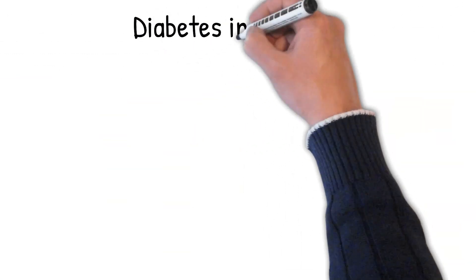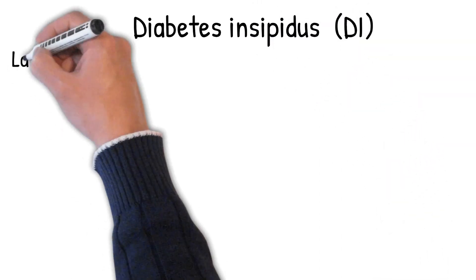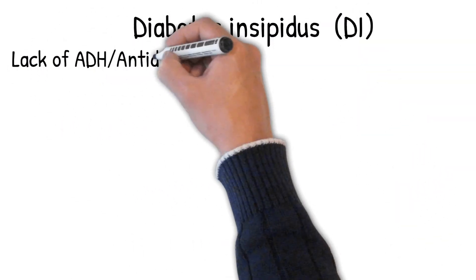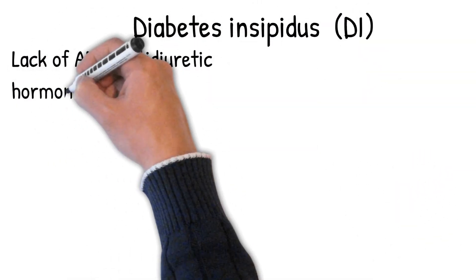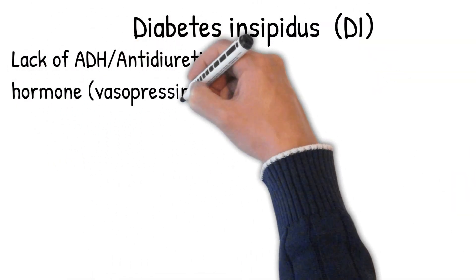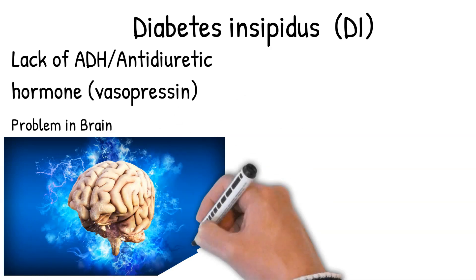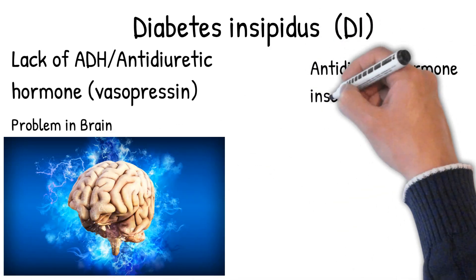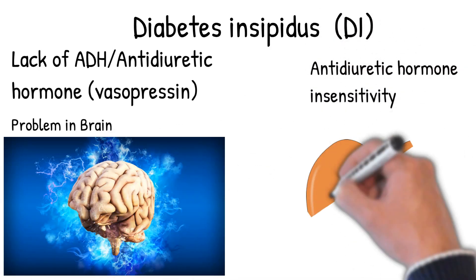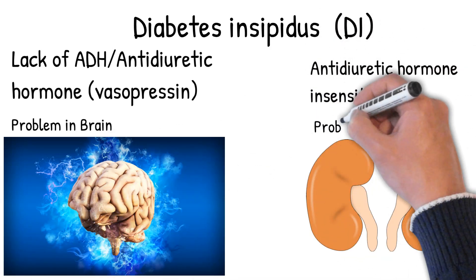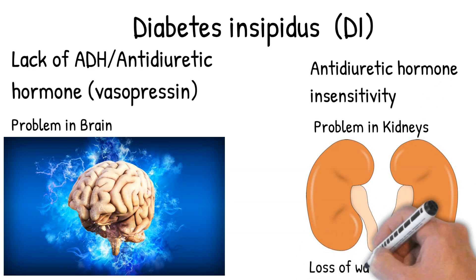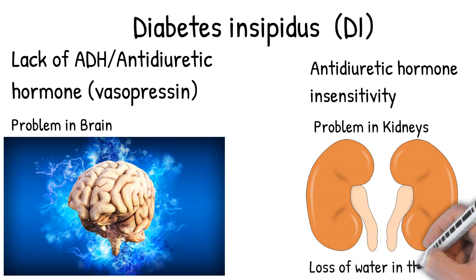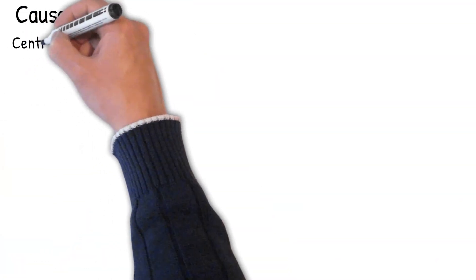Diabetes insipidus refers to a defect in normal dilution due to the absence of antidiuretic hormone, also called vasopressin. Sometimes it is caused by antidiuretic hormone insensitivity of the collecting tubules to ADH, leading to a loss of water in the urine.